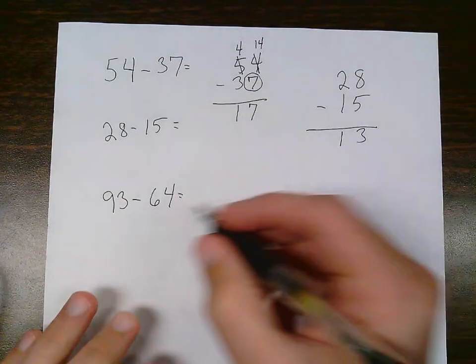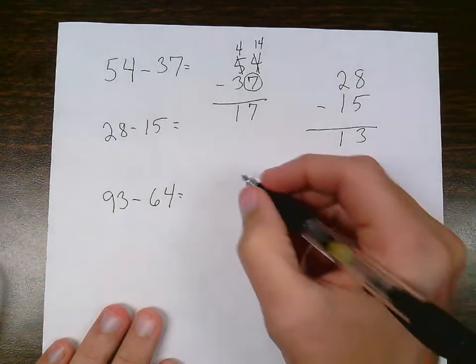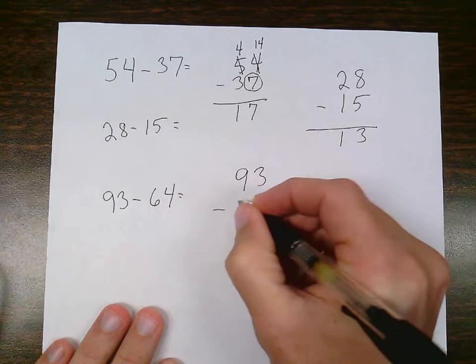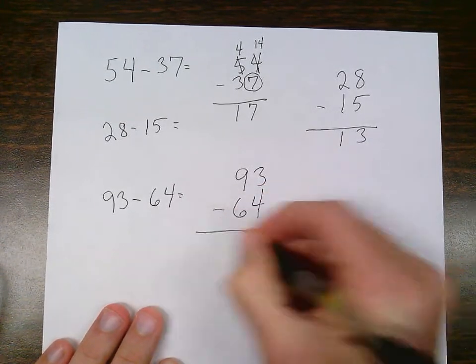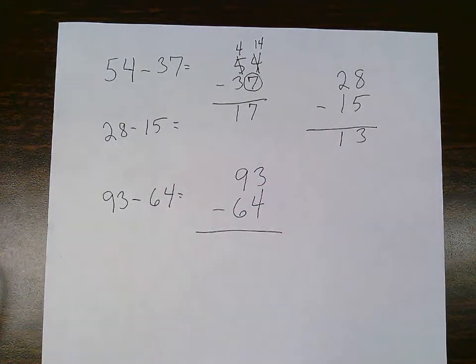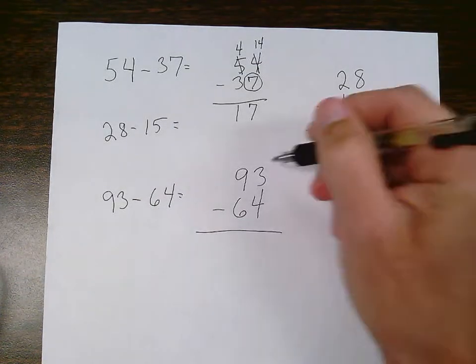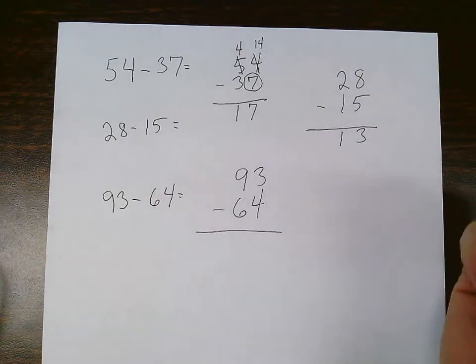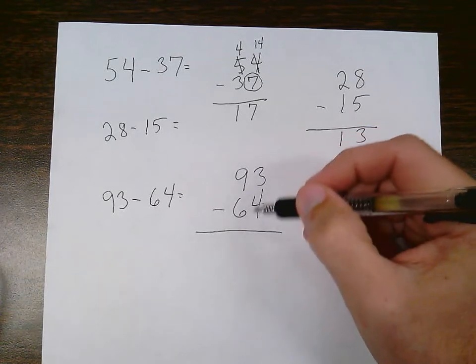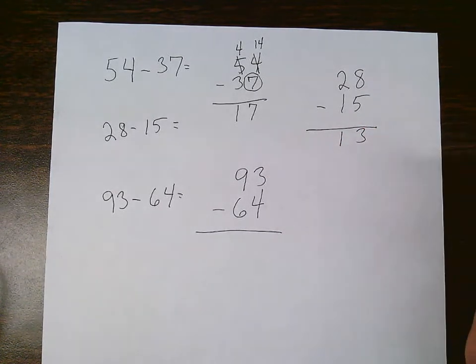And last one here, 93 minus 64. Making sure my columns are nice and neat lined up with the place values being lined up. So I ask myself the question again, in the ones place to start, 3 minus 4, can I do it?